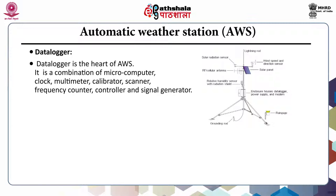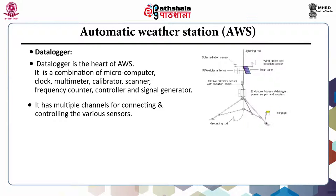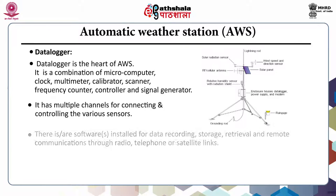The data logger is the heart of the AWS. It is a combination of microcomputer, clock, multimeter, calibrator, scanner, frequency counter, controller and signal generator all in one box. It has multiple channels for connecting and controlling various sensors. Software installed inside the data logger guides the sensors on how to collect data, at what interval, how to store it, how to retrieve the data, and in case of remote communications, how it should be communicated through radio, telephone, or satellite links.